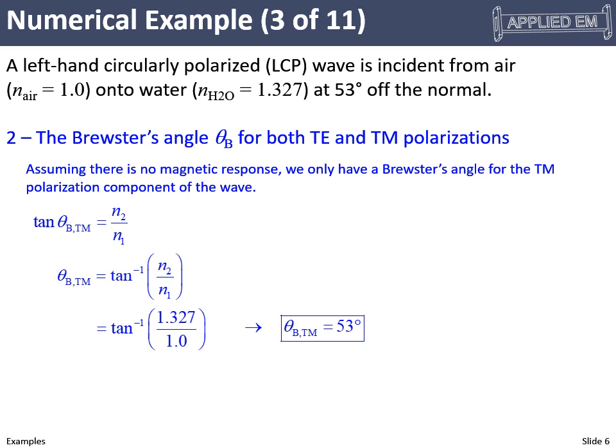Notice that 53 degrees is exactly our angle of incidence, so our wave happens to be incident at the Brewster's angle. At the Brewster's angle, the TM polarization completely transmits — there is no reflected wave for TM. Since our wave is circularly polarized, the TM component completely transmits, meaning the only thing that will reflect is the TE component. This will come up again when we discuss the polarization of the reflected wave.